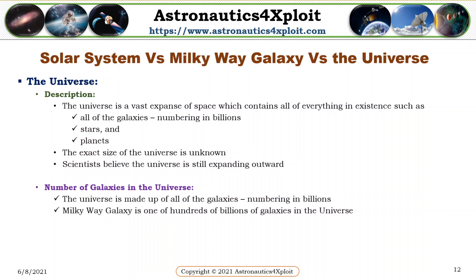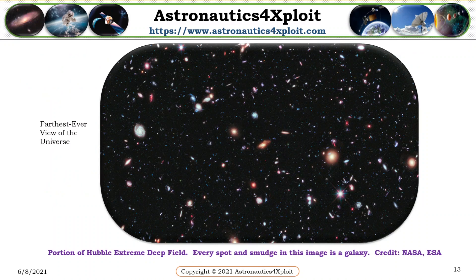The universe is a vast expanse of space which contains all of everything in existence, such as all of the galaxies numbering in billions, stars, and planets. The exact size of the universe is unknown. Scientists believe that the universe is still expanding outward. The universe is made up of all of the galaxies. The Milky Way galaxy is one of hundreds of billions of galaxies in the universe. This picture shows the view of the universe.